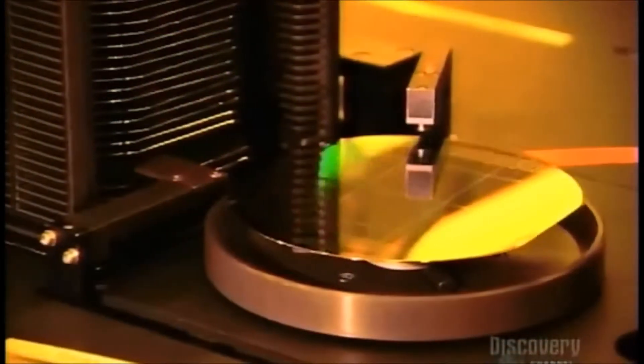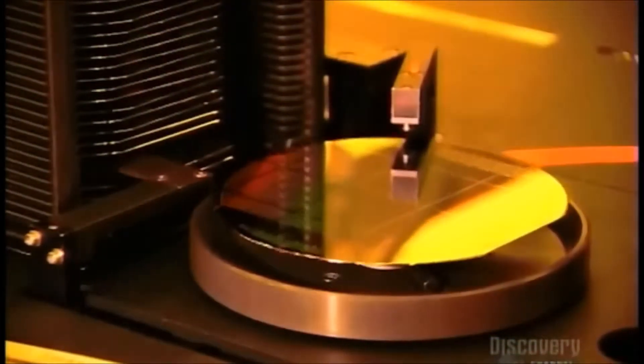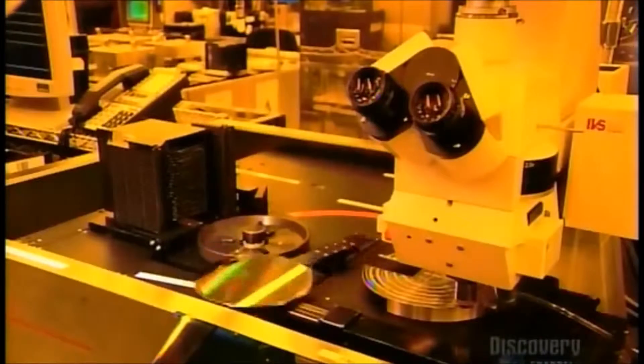This machine exposes the masked wafer to ultraviolet light. The resin shielded by the lines of the circuitry pattern remains intact, protecting the conductive layer beneath it. The resin on the areas not masked by the circuitry pattern breaks down and becomes vulnerable to specific chemicals.